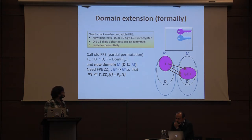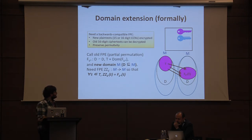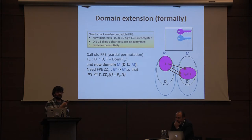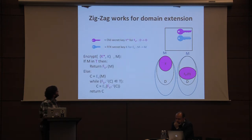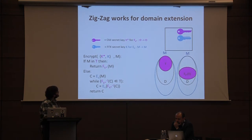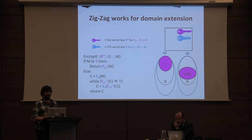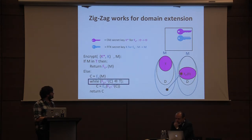We need to build an FPE over the whole set M with the preservation property that the image of points in T is the same under ZZ and under the old cipher F. We have the old cipher F_K* over D and the new cipher E_K over the whole set M. Zigzag actually works fine for domain extension — the two easy cases stay the same and the hard collision case works the same way as well.